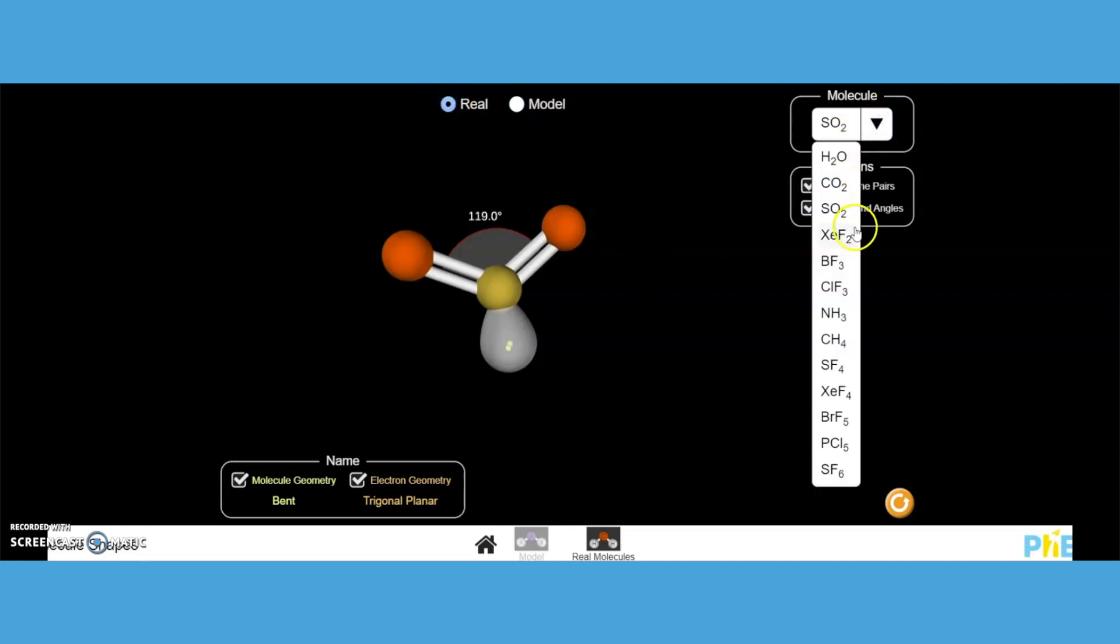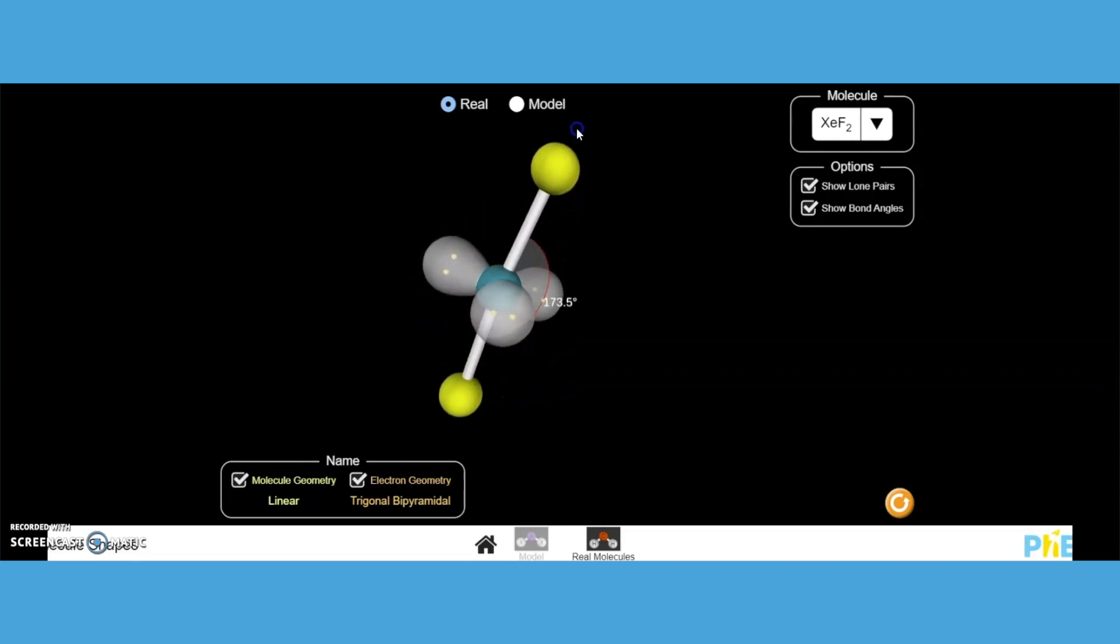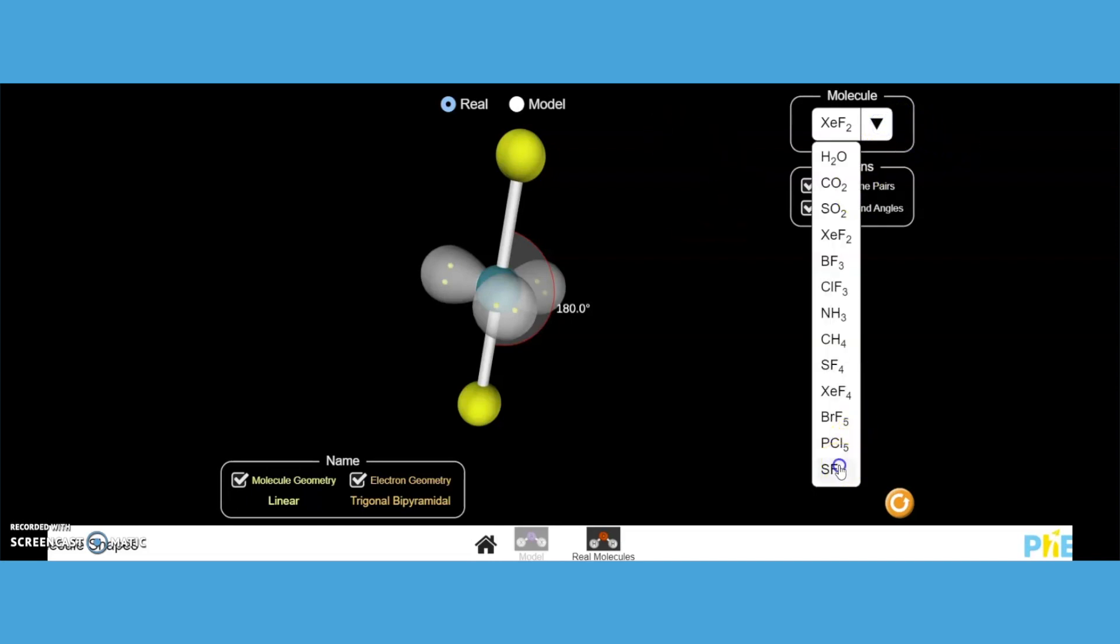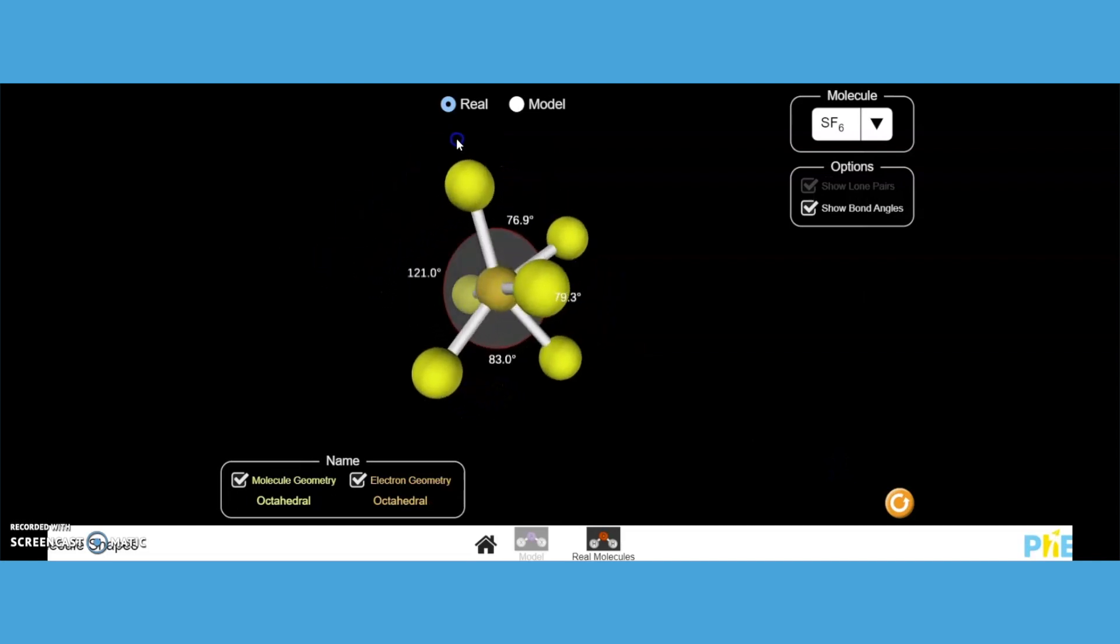This walks them through all of these structures that really go through that entire molecular geometry chart that I shared with you, comparing and contrasting between a linear structure and a trigonal bipyramidal structure. It takes them all the way to the octahedral.